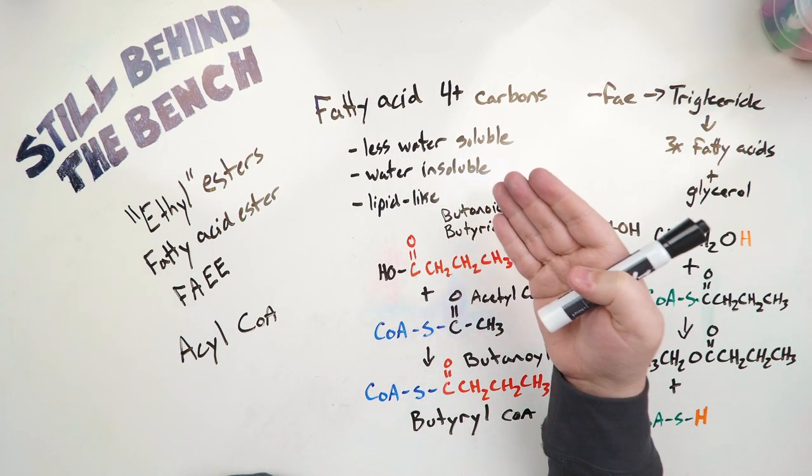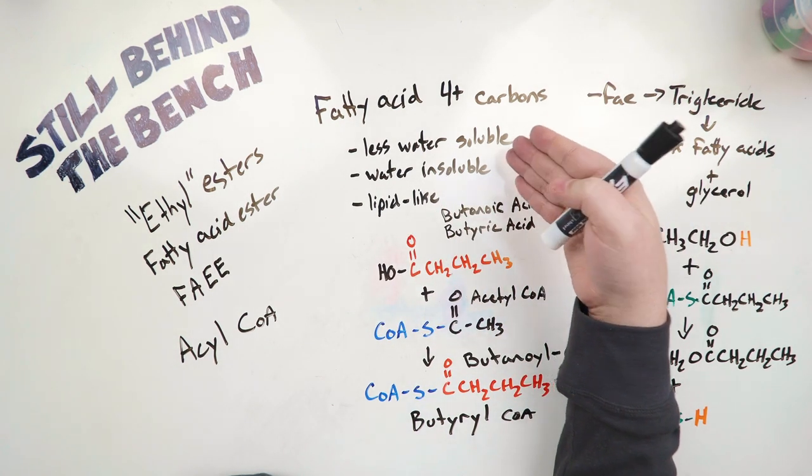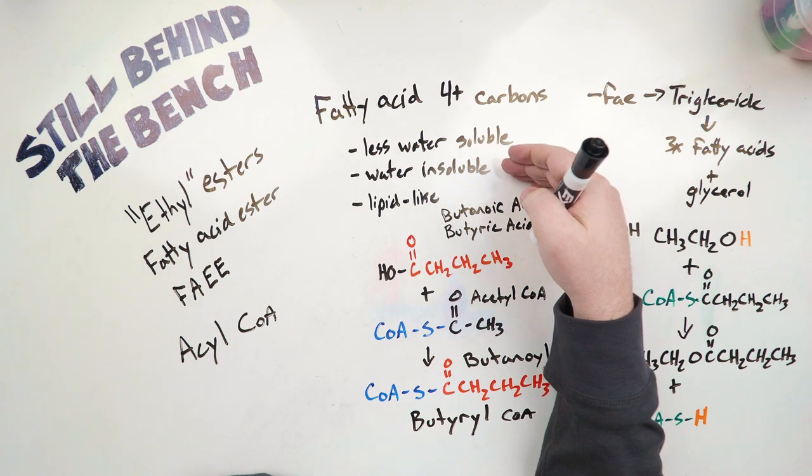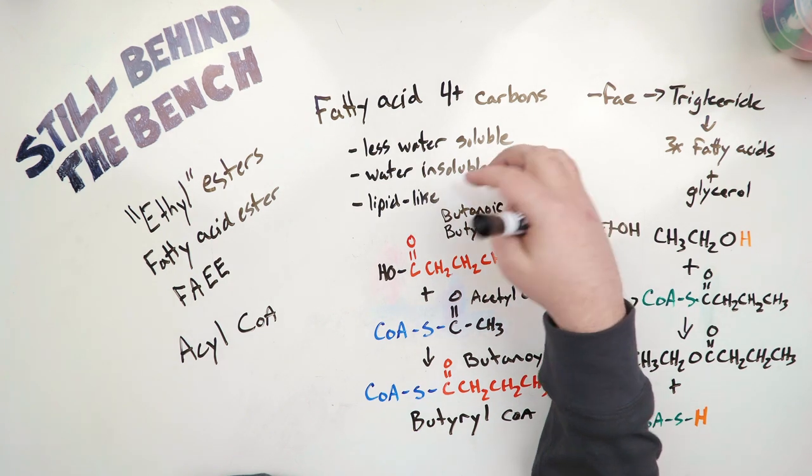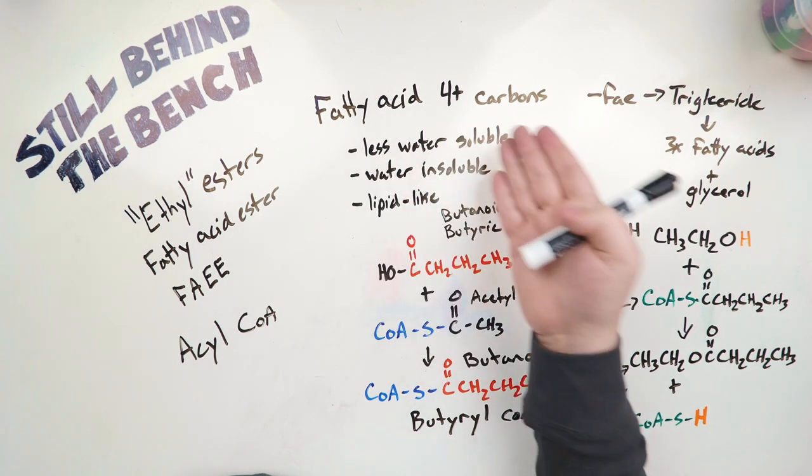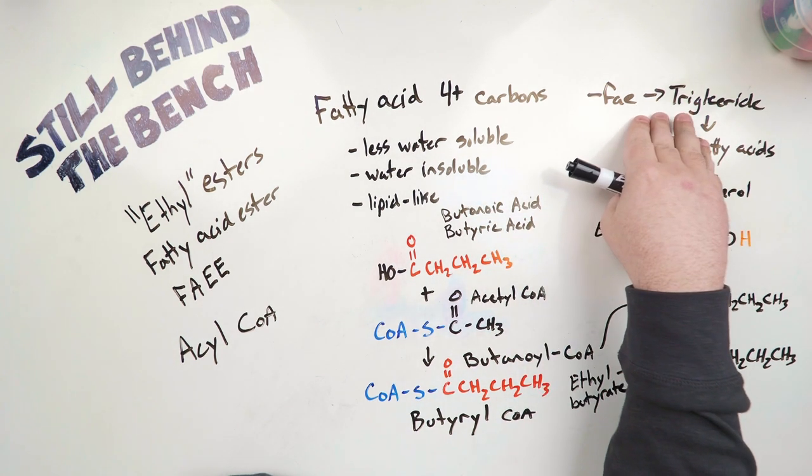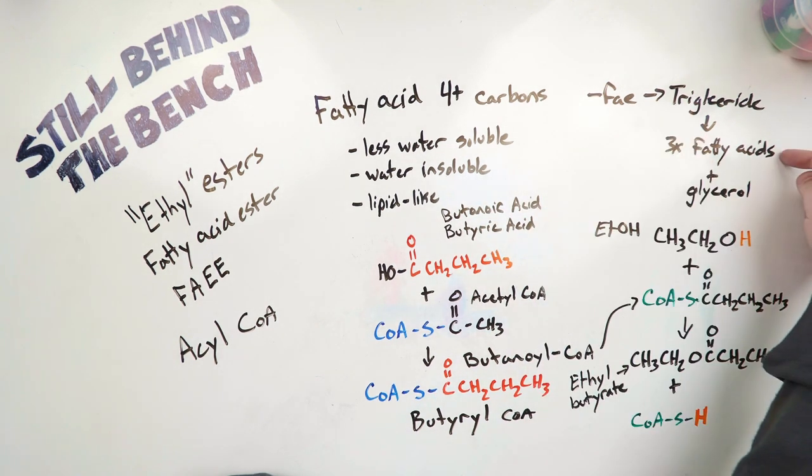So fatty acids are just carboxylic acids that have four or more carbons. Because they have four or more carbons, they are usually less water-soluble, or they can be water-insoluble, so they can't dissolve in water at all, and they become more lipid-like, so they're called fatty acids. You may have heard of triglycerides. That's one of the most common fatty acid esters. It is three fatty acids connected to a glycerol backbone. So you have your acids, and then you have your alcohol.